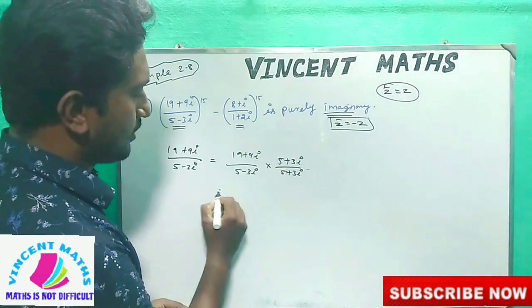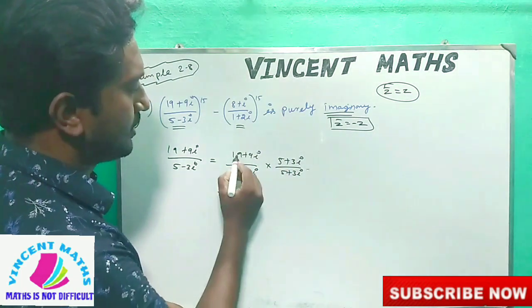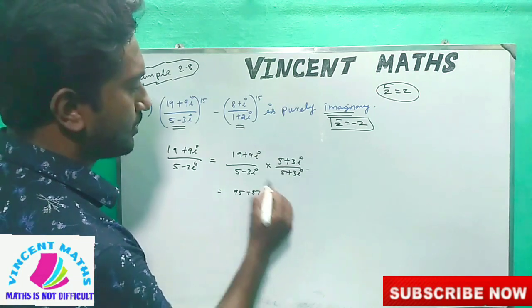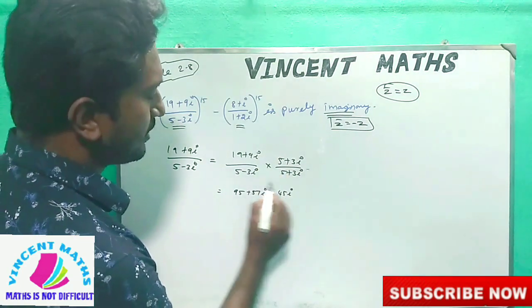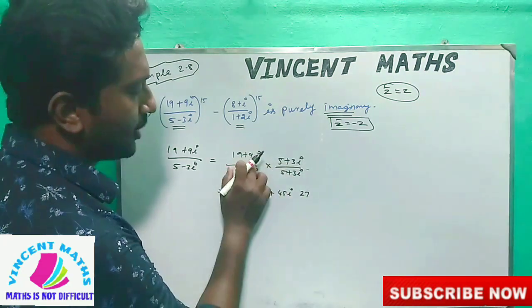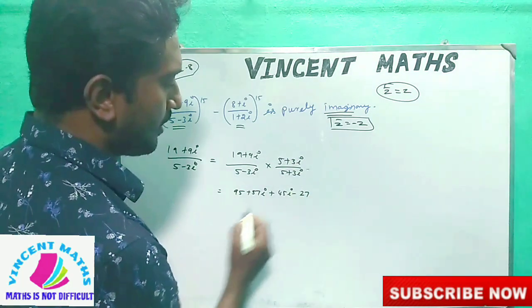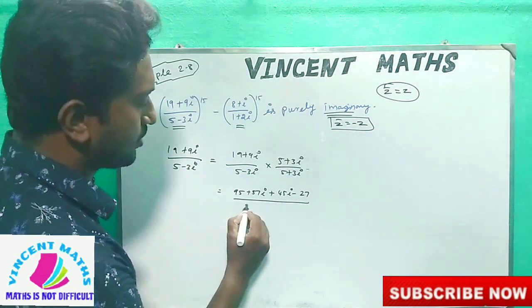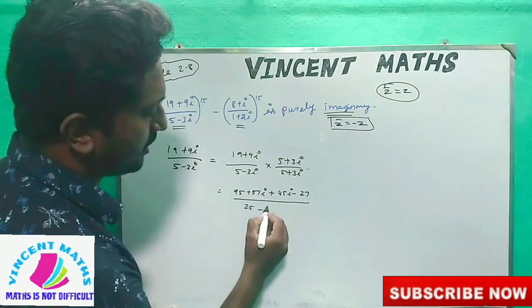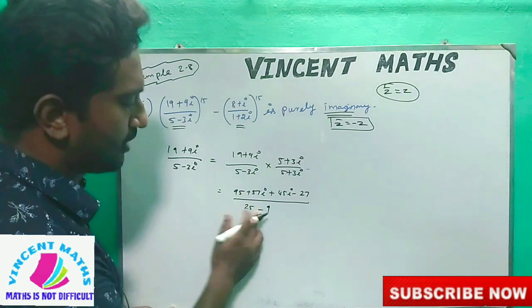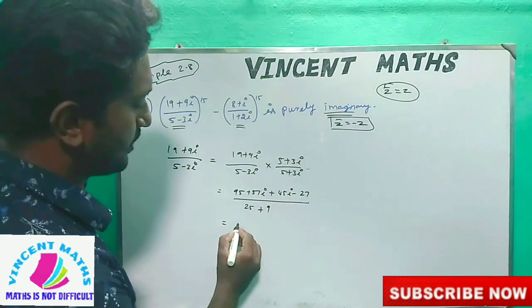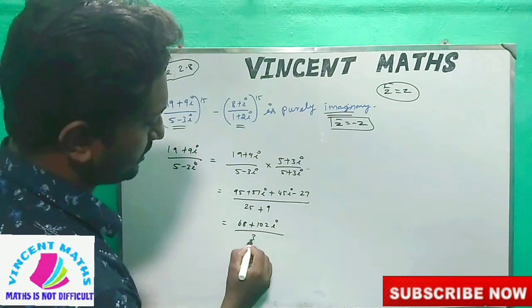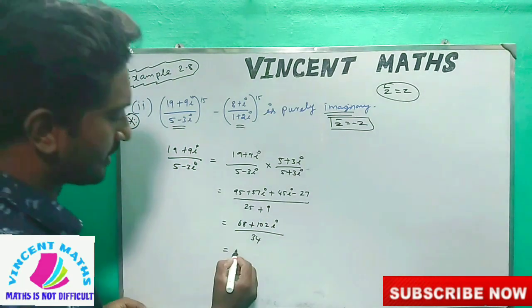We compute (19 plus 9i) over (5 minus 3i), multiplied by (5 plus 3i) over (5 plus 3i). Expanding: 25 plus terms. Using i squared equals minus 1, we get numerator terms. We have a minus b in the denominator, giving a squared plus b squared. Adding: 68 plus 102i over 34. Separating: 68 over 34 plus 102 over 34 i, which gives 2 plus 3i.